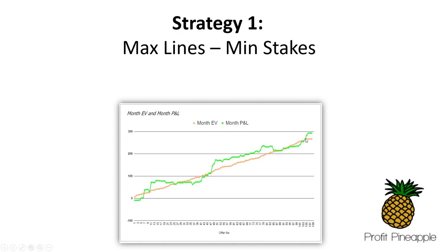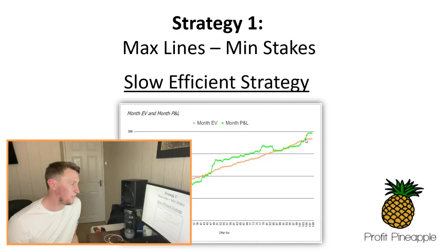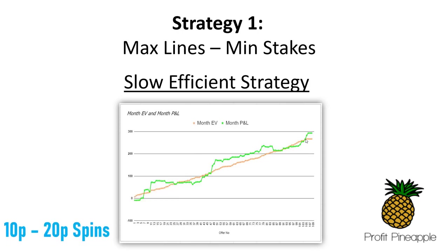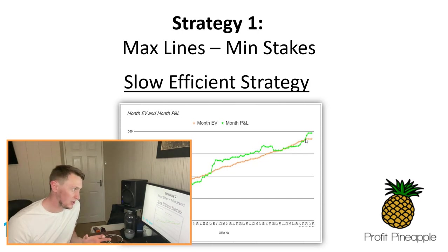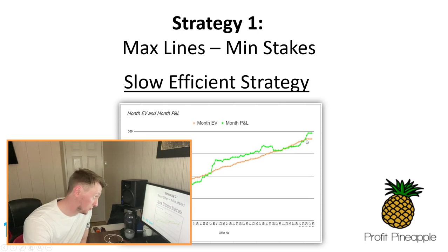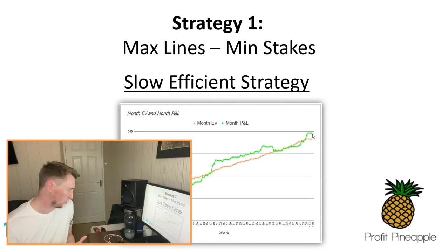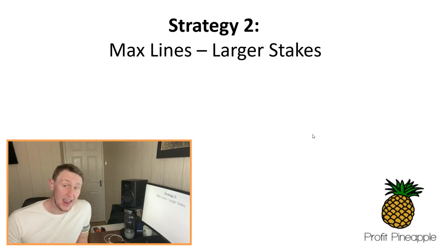There's a really good correlation between the two lines because it's a slow, efficient strategy. It does take quite a long time because you're using 10p and 20p spin sizes, taking a long time to wager. If you're wagering £10 to get free spins, you'd have to do 100 spins at 10p to wager that £10. But as a result, it's highly efficient and you'll pretty much follow the EV line very closely in terms of your profit and loss.